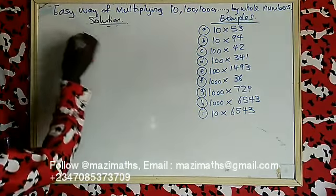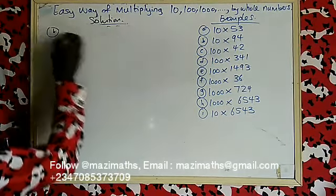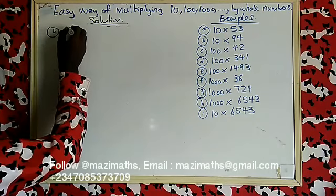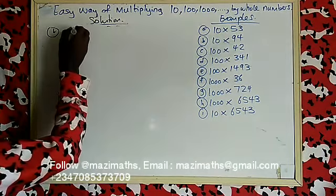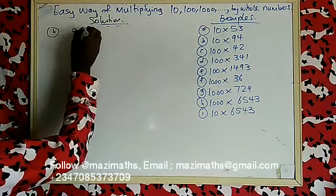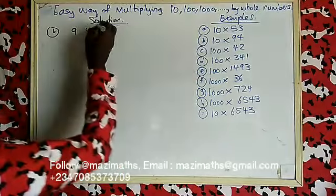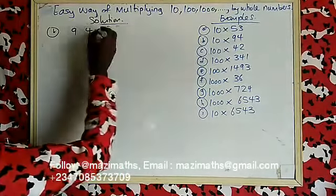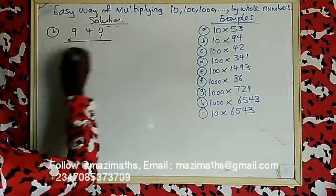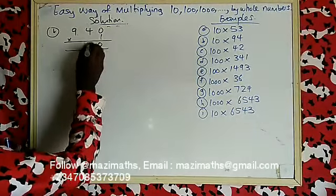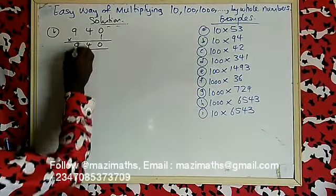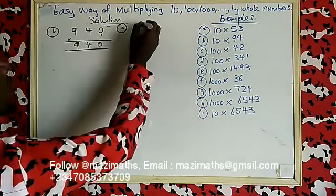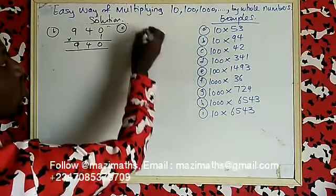The second example: 10 times 94. Write 94 first, and 10 has one zero, so put one zero here. Then multiply: one times four is four, one times nine is nine. Your answer is 940.